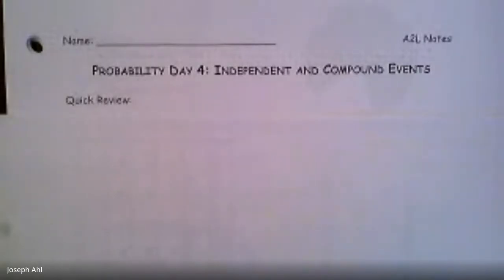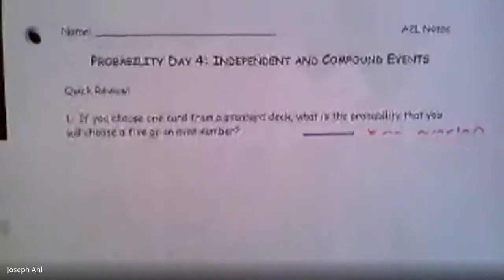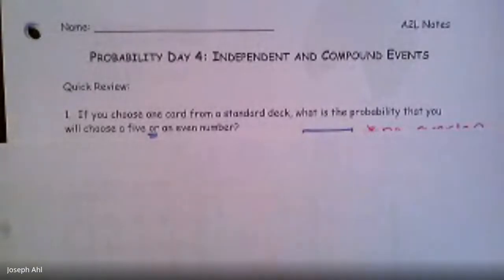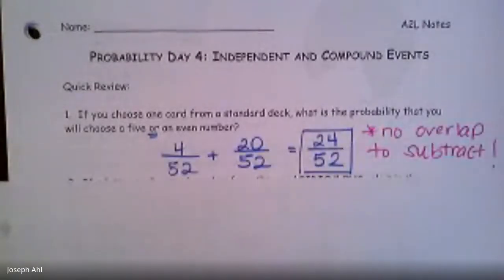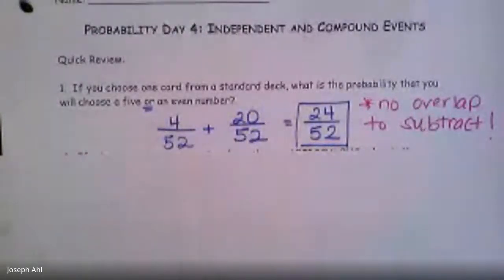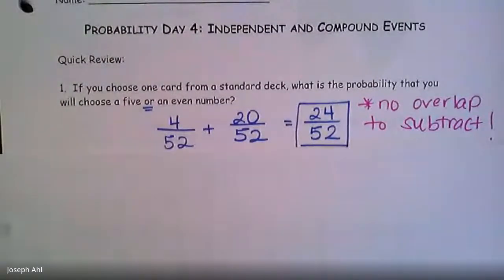As a quick review, there are two questions to try at the start of today's notes. The first one: if you choose one card from a standard deck, what is the probability that you'll choose a five or an even number? That keyword 'or' will always mean to add the probabilities together. There are four fives in the deck out of 52, and there are 20 even cards — the twos, fours, sixes, eights, and tens, four of each, giving five even numbers times four equals 20. Adding those together gives you 24 out of 52.